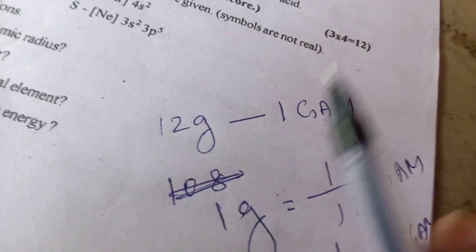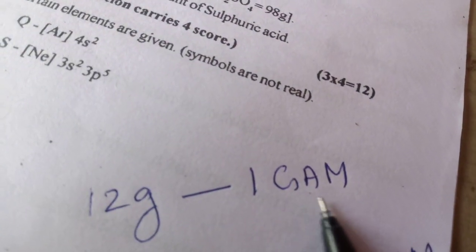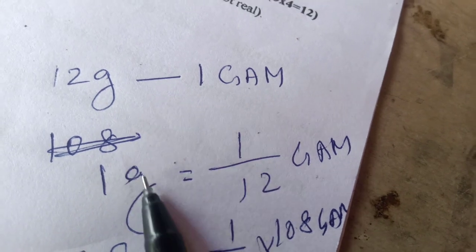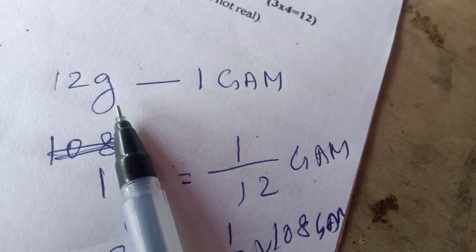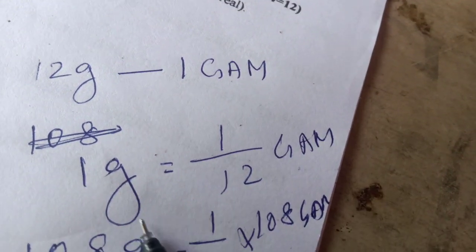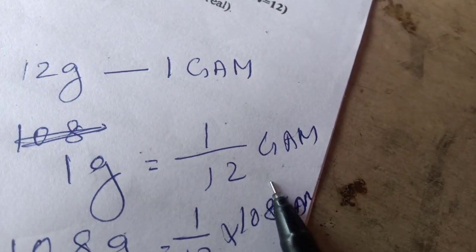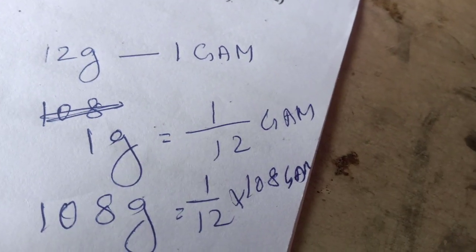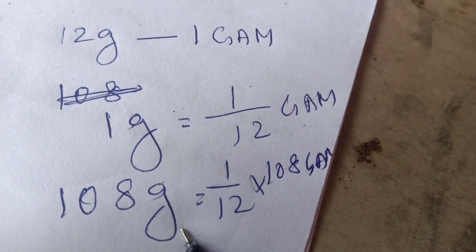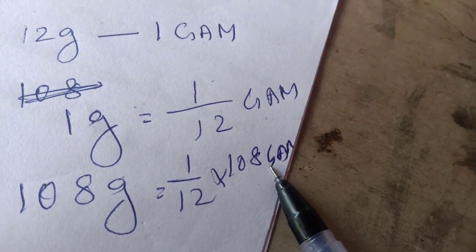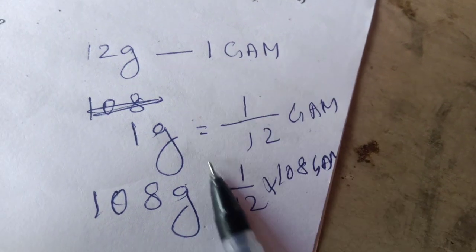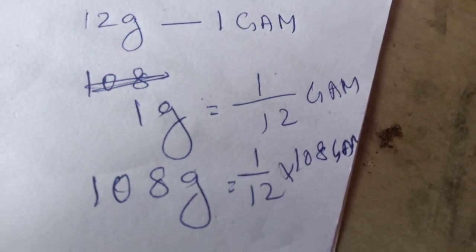Then 12 gram equal to 1 gram atomic mass. We have 1 gram equal to 1 by 12 GAM. Then for 12 gram it is 1 GAM, for 1 gram it is 1 by 12 GAM. Then for 108 gram equal to 1 by 12 into 108 GAM. That is the method of getting this answer.